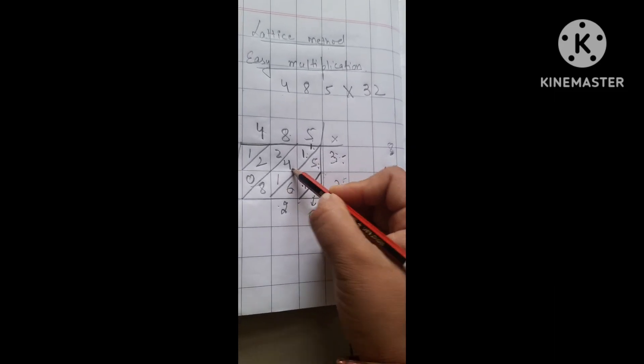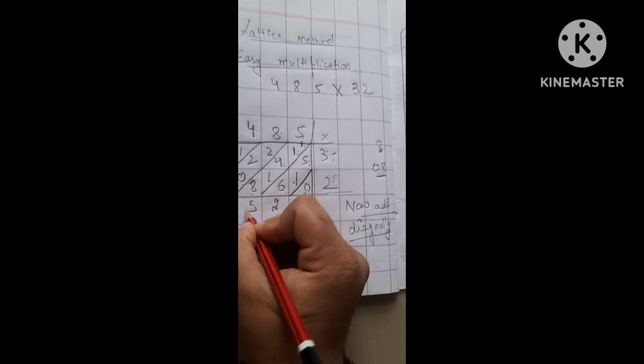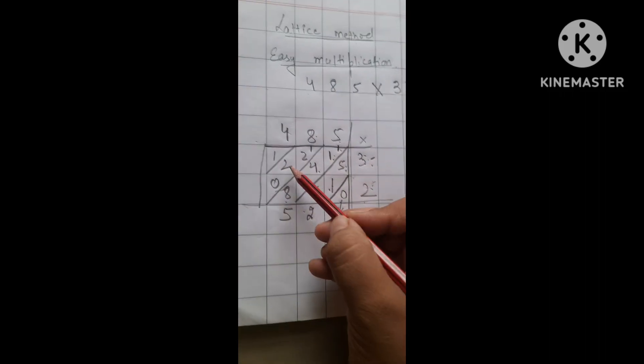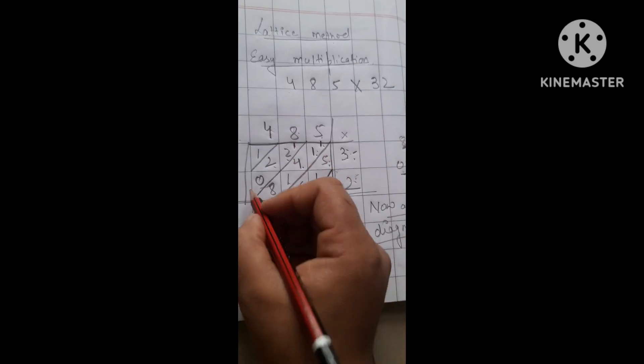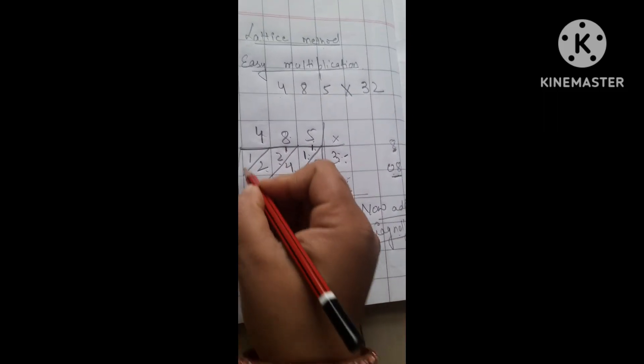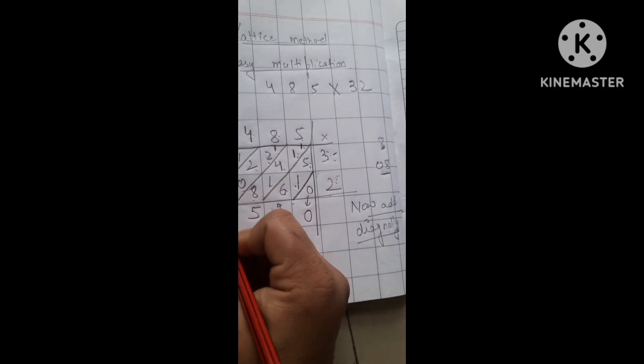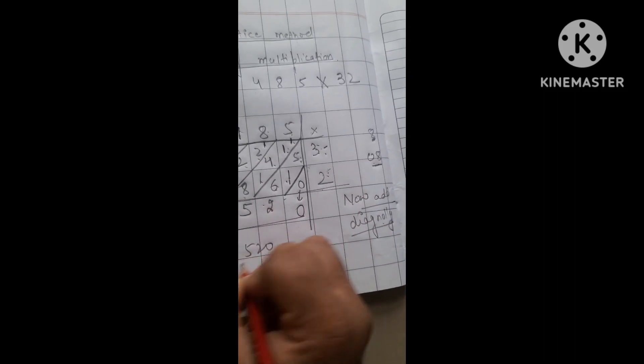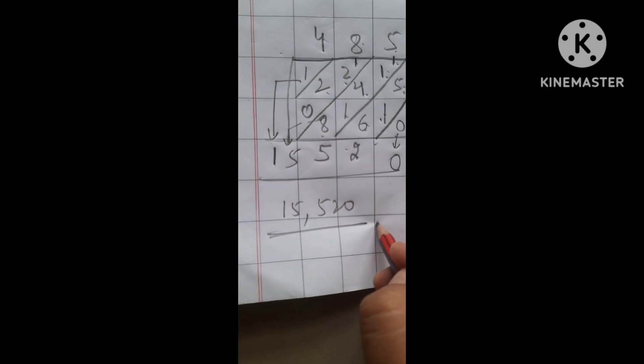Then we have 15. Then we have 5. Then we have 5 again. Then we have 1. Now add 2 plus 2 plus 1, it's 5. Next, we have 1. This is our answer. So, 485 by 32, we have 15,520.